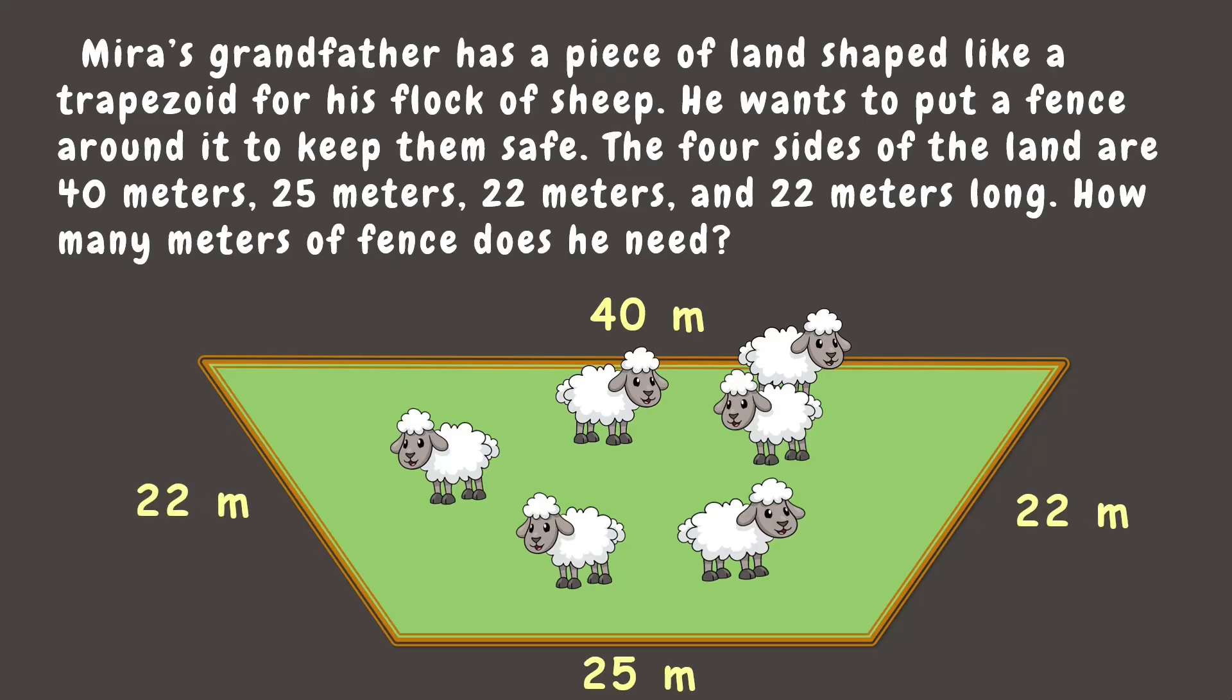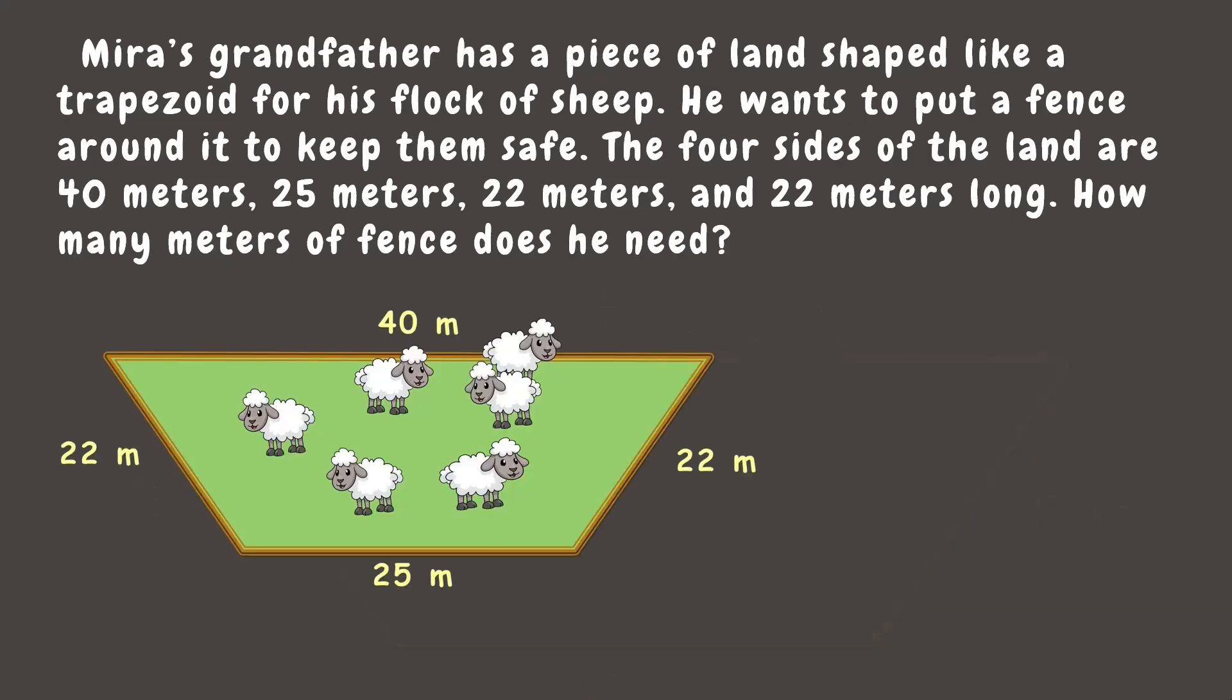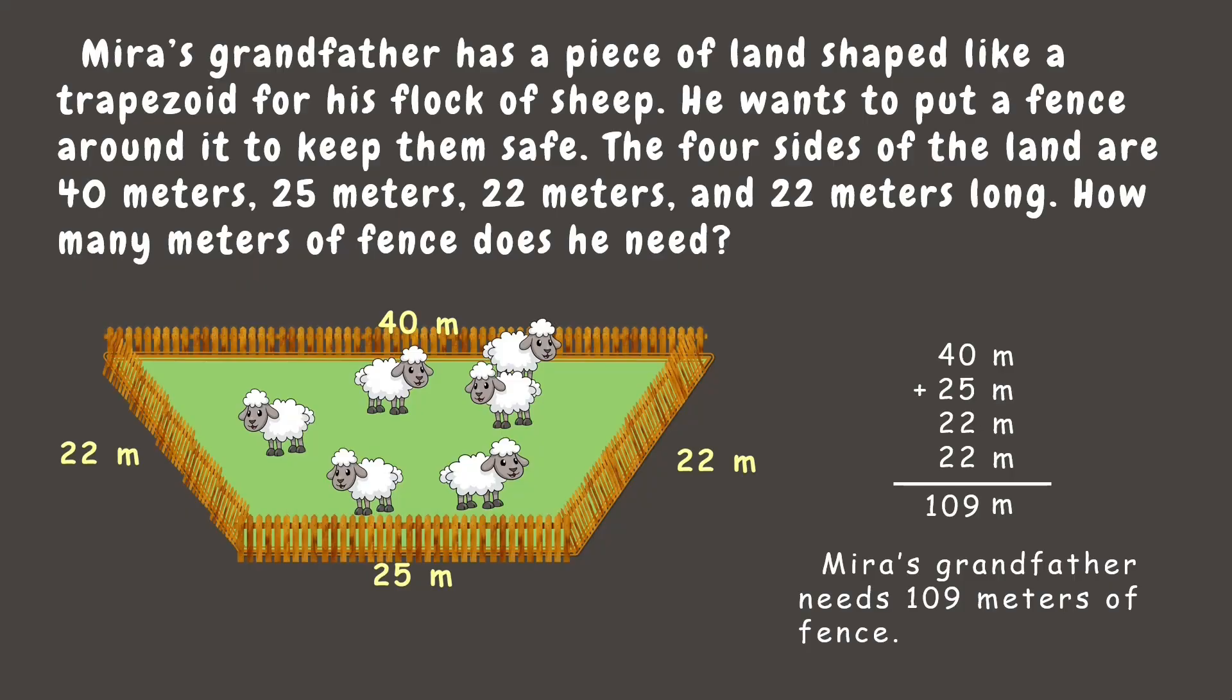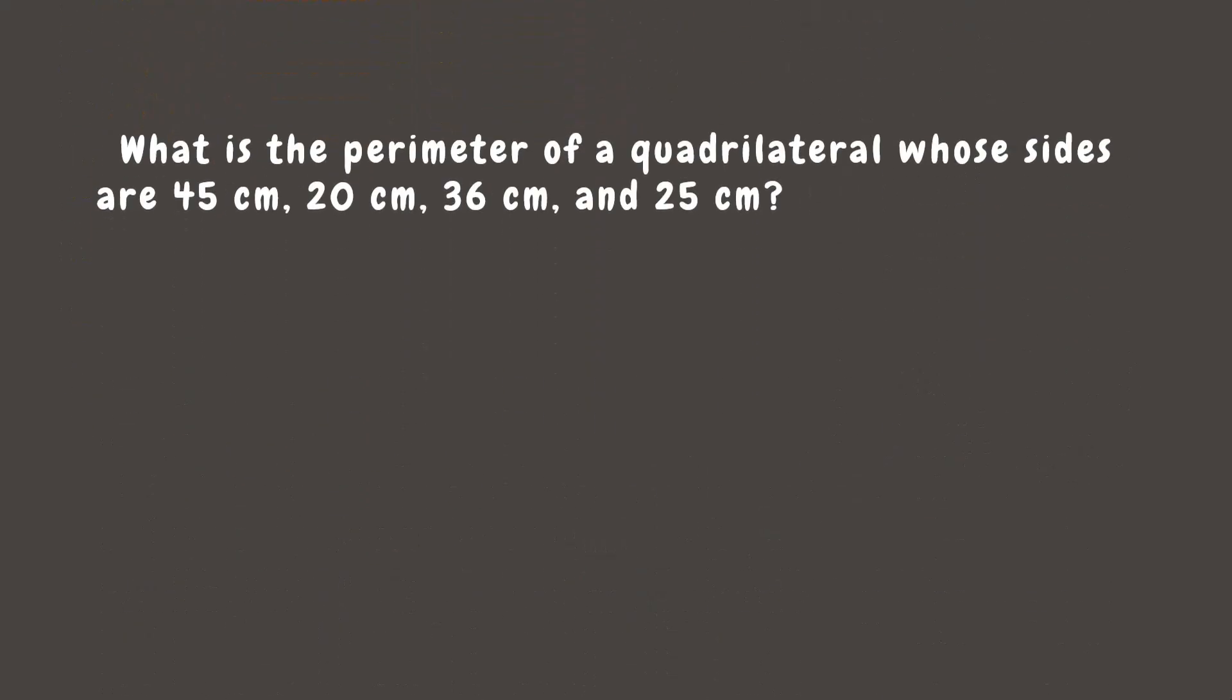That's right, we need to add them all up. So let's do it: 40 plus 25 plus 22 plus 22 is 109 meters. Therefore, Mira's grandfather needs 109 meters of fence. Wonderful!